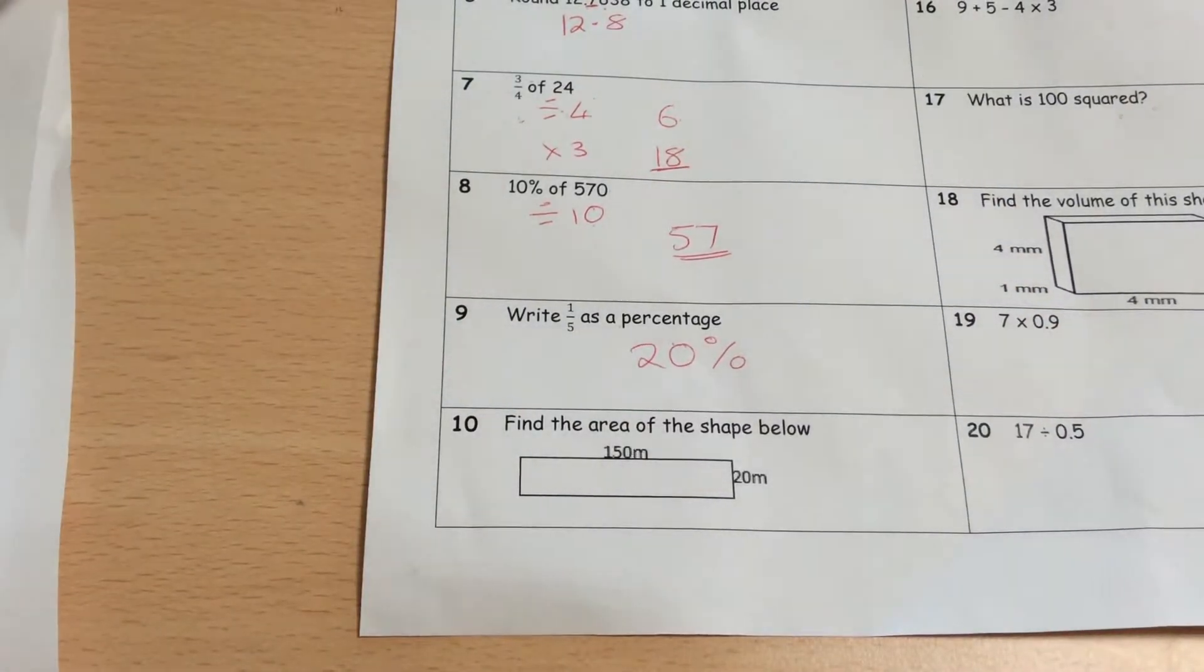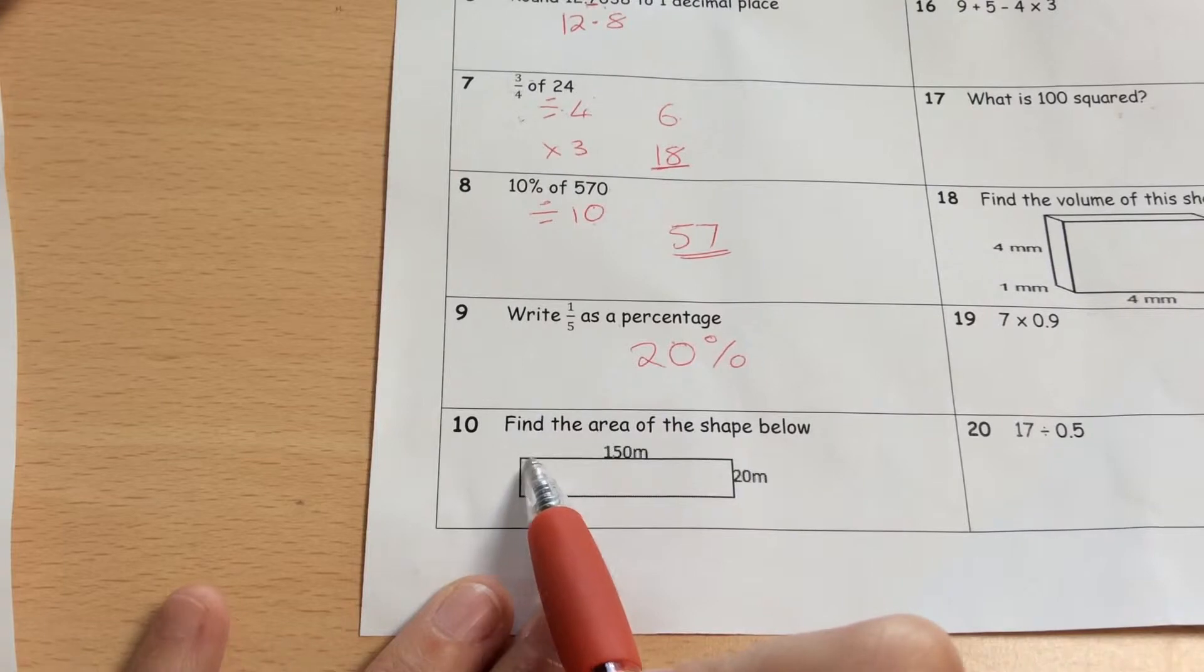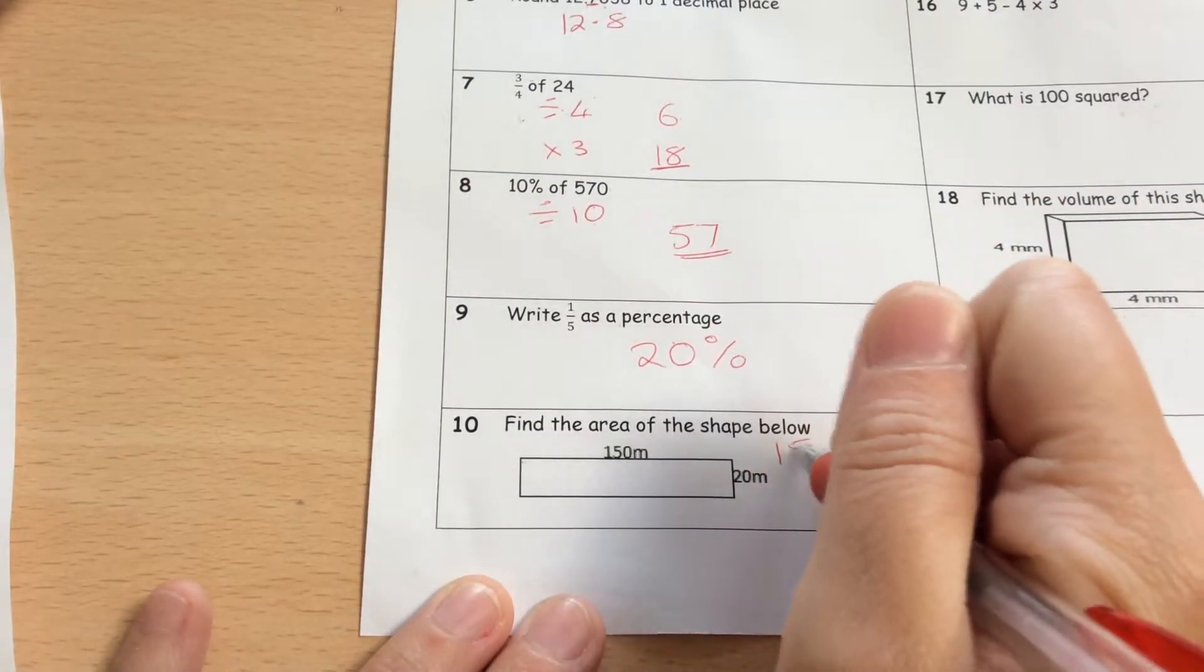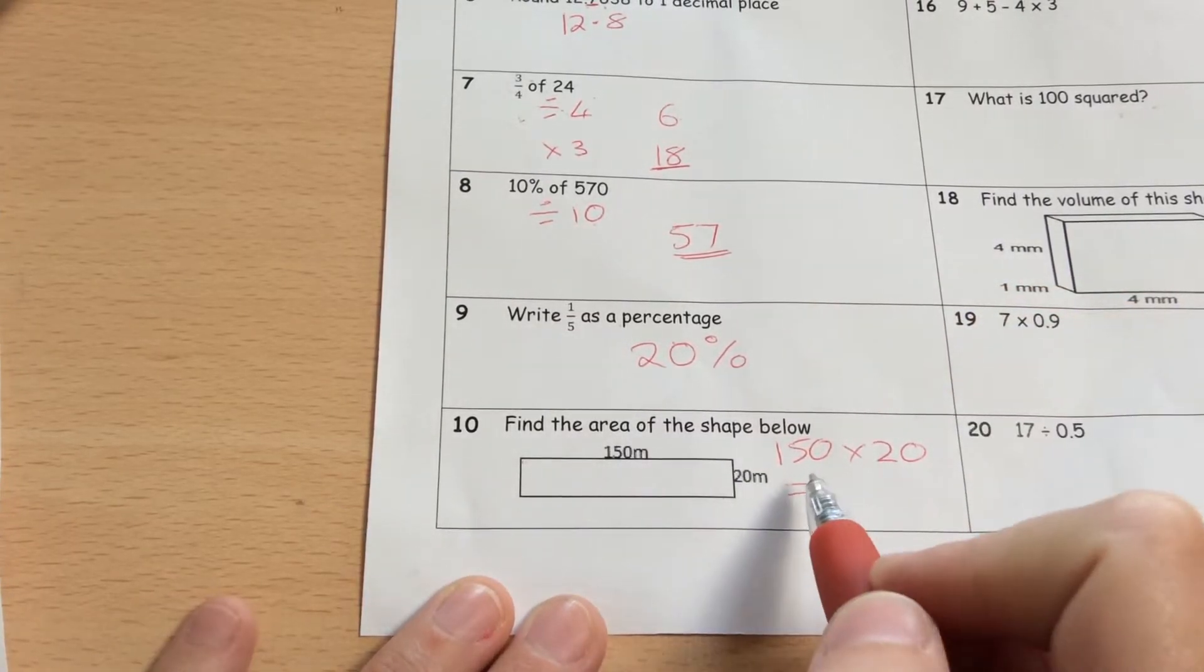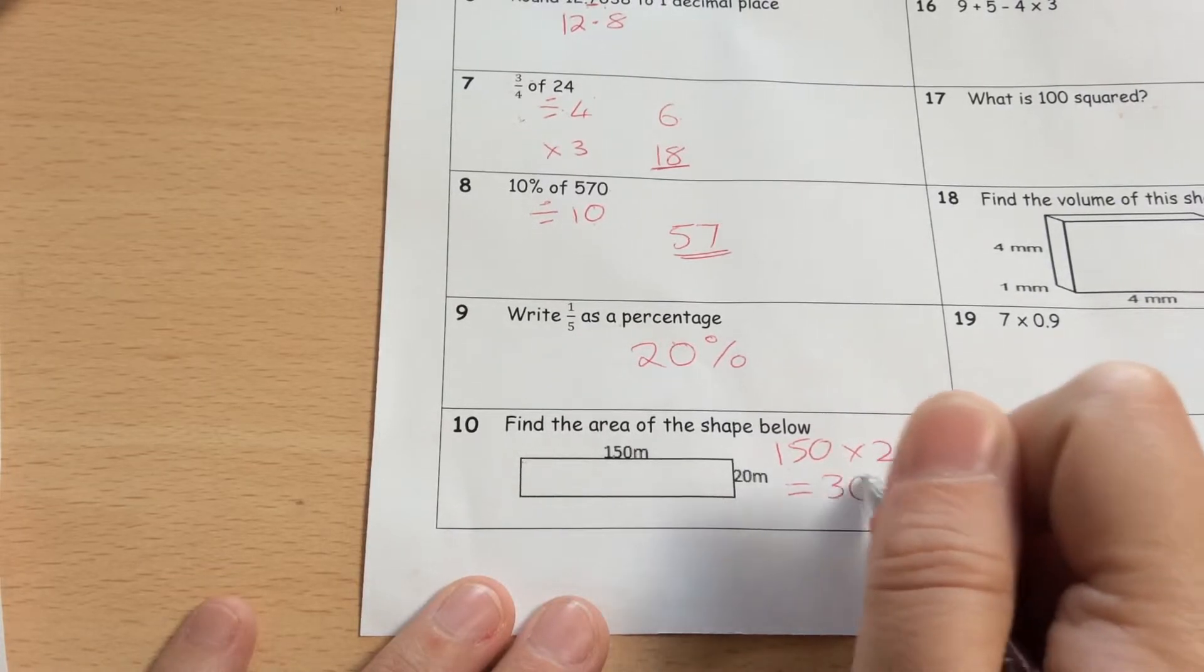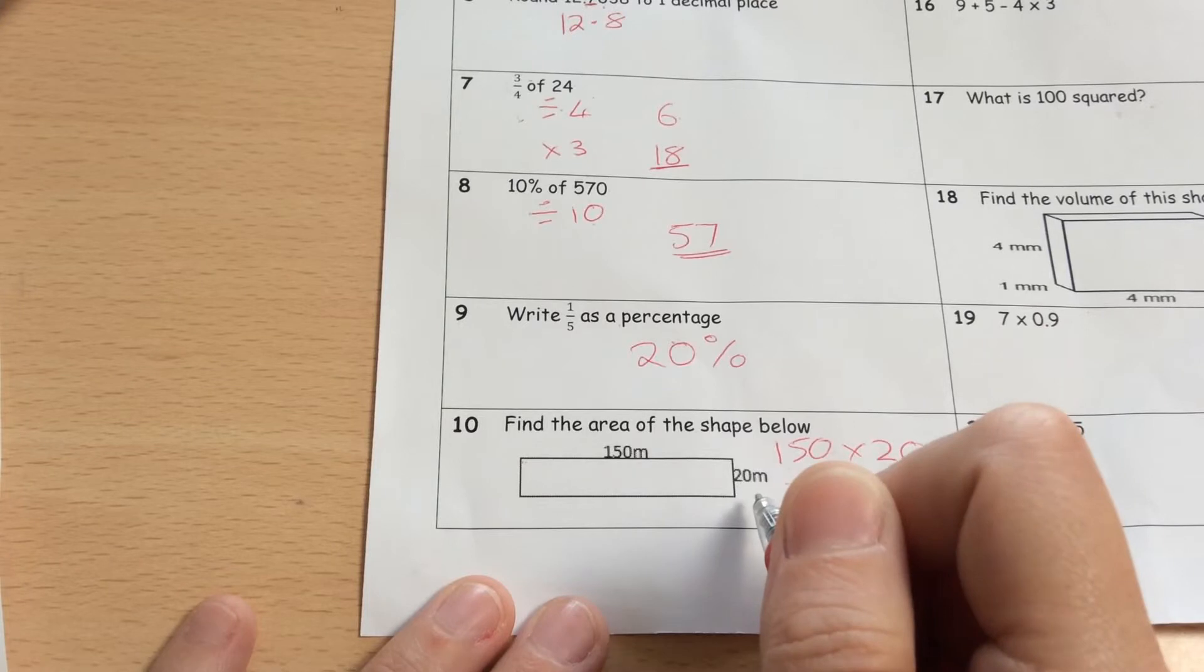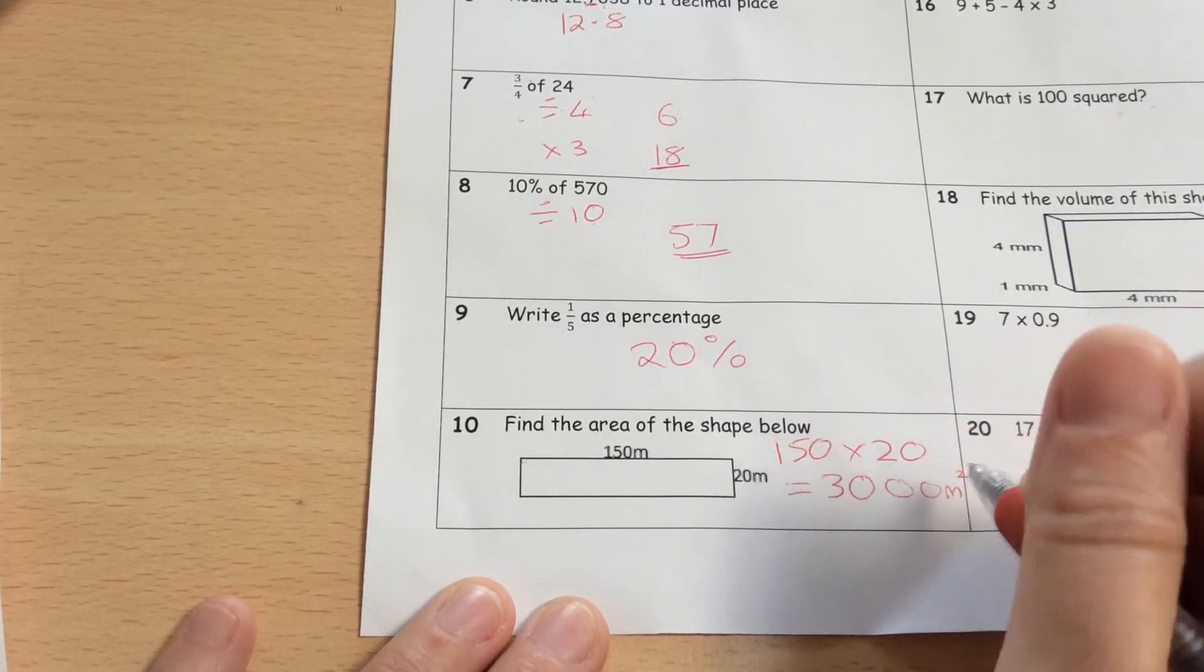To find the area of a rectangle, we use length times width. The length is 150. The width is 20. Working this out without a calculator, I would do 15 times 2, which is 30. Don't forget about those two zeros. And our units for area is always going to be squared. So it'd have to be in meters squared.